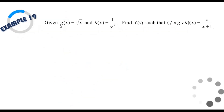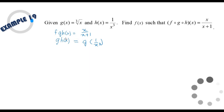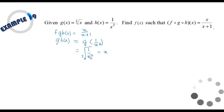Now for the last example of composite functions. Given g(x) = ³√x (cube root of x) and h(x) = 1/x³, find f such that f∘g∘h(x) = x/(x + 1). We write f(g(h(x))) = x/(x + 1). First, find g(h(x)) by substituting h(x) = 1/x³ into g: we get the cube root of 1/x³ = 1/x.